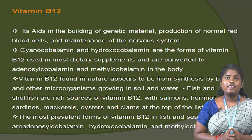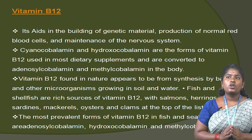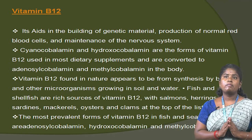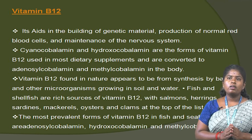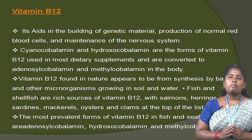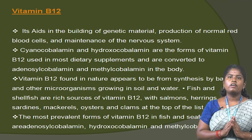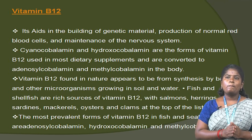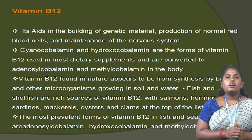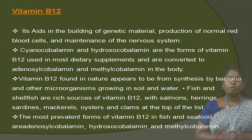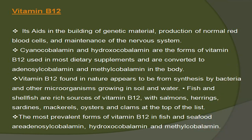Vitamin B12 aids in building genetic material, production of normal red blood cells and maintenance of the nervous system. Cyanocobalamin and hydroxocobalamin are the forms of vitamin B12 used in dietary supplements, and are converted to adenosylcobalamin and methylcobalamin in the body. Vitamin B12 found in nature appears to be derived from the synthesis of bacteria and other microorganisms growing in soil and water. Fish and shellfish are a rich source of vitamin B12, with solvents, herring, salmon, mackerel, oysters and clams at the top of the list.